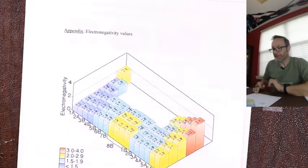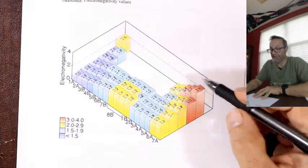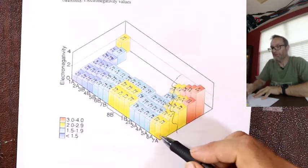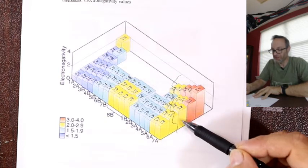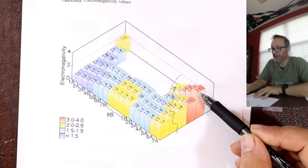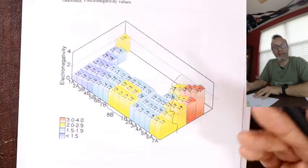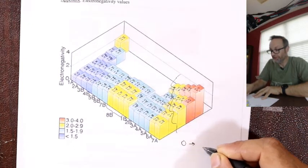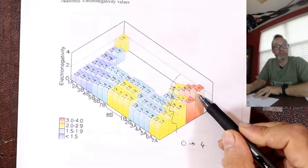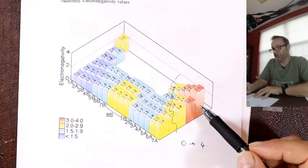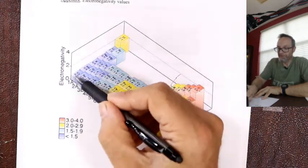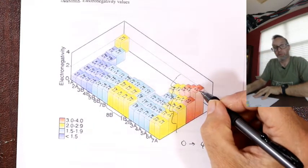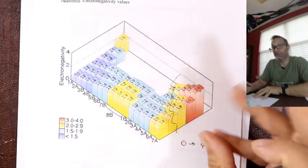If you look at the periodic table graph, why do things in the top right-hand corner make minus ions? It's because they're all super strong. The height represents the electronegativity strength. Fluorine is the strongest electron stealer in nature — the scale runs from zero to four, and fluorine has a strength of four. The trend goes from bottom-left to top-right. Fluorine tops the chart — not noble gases because they don't make bonds.